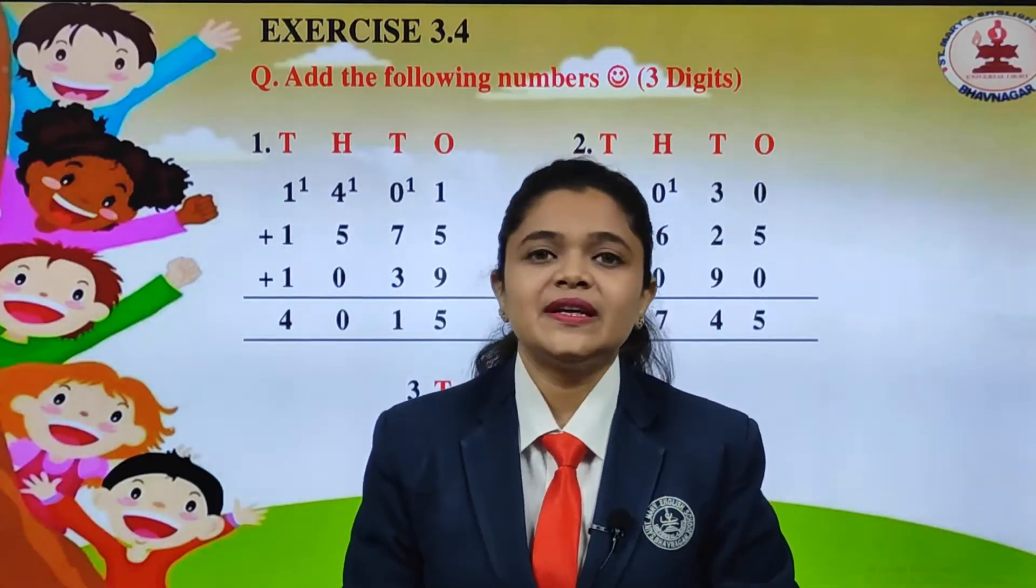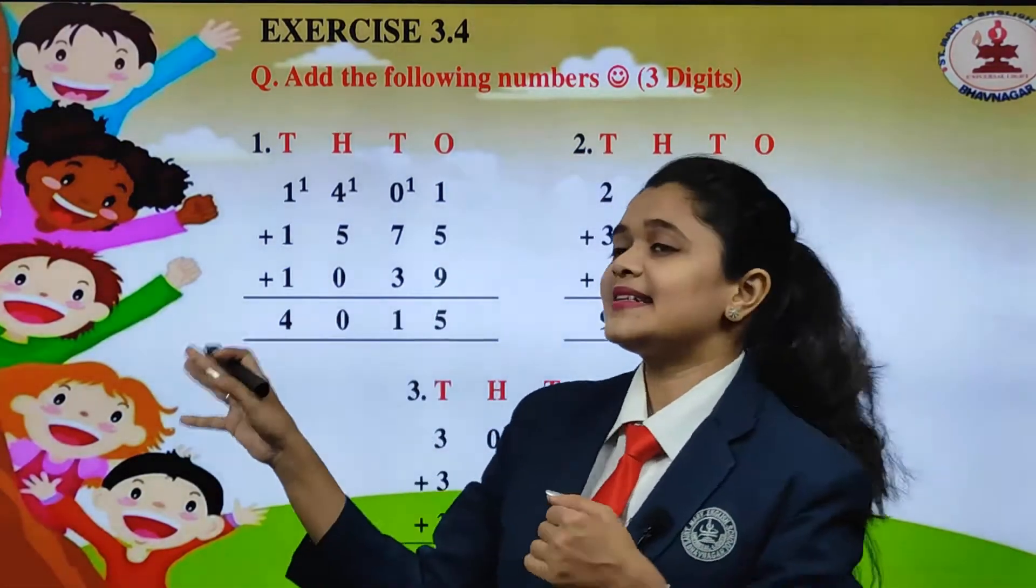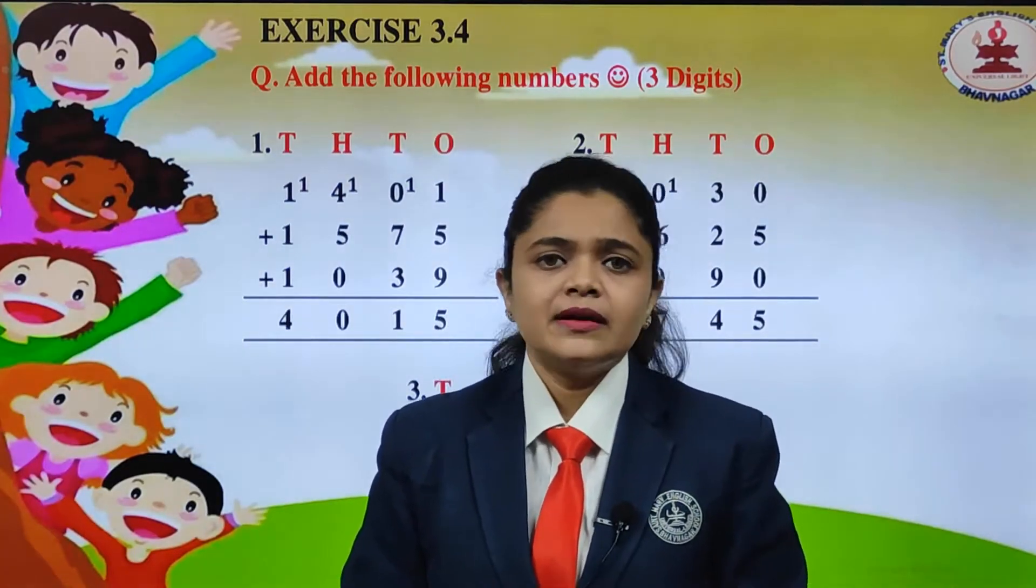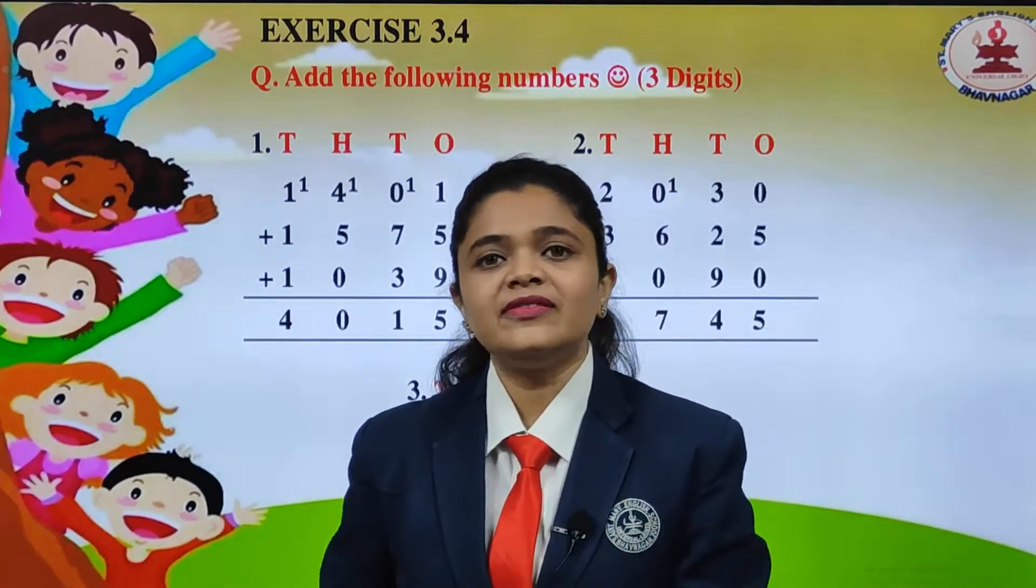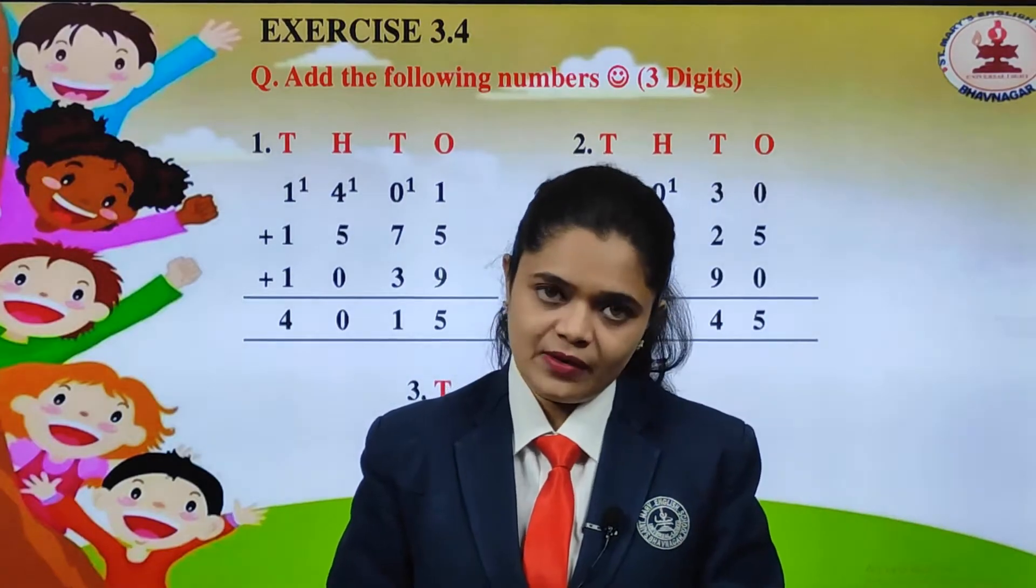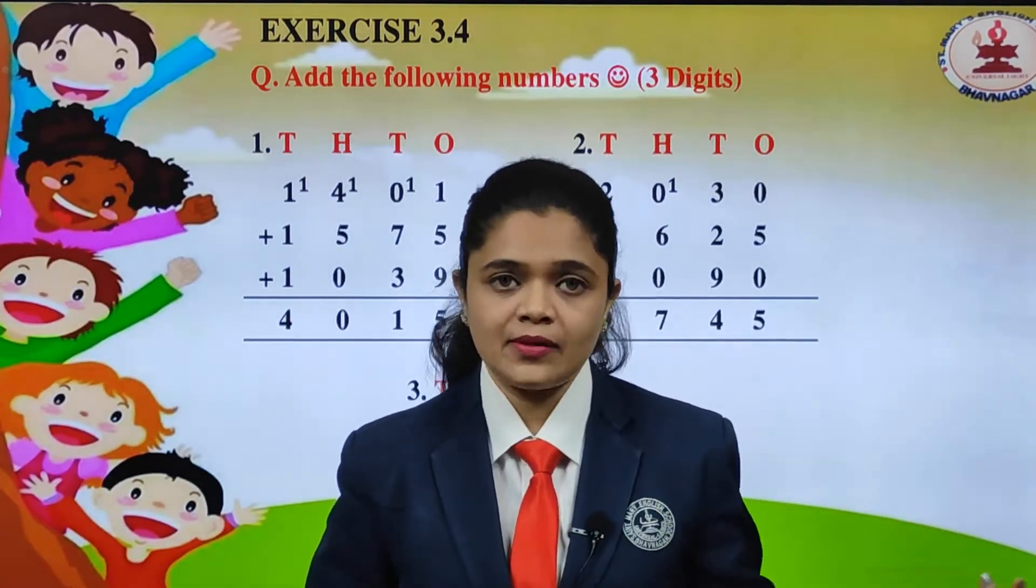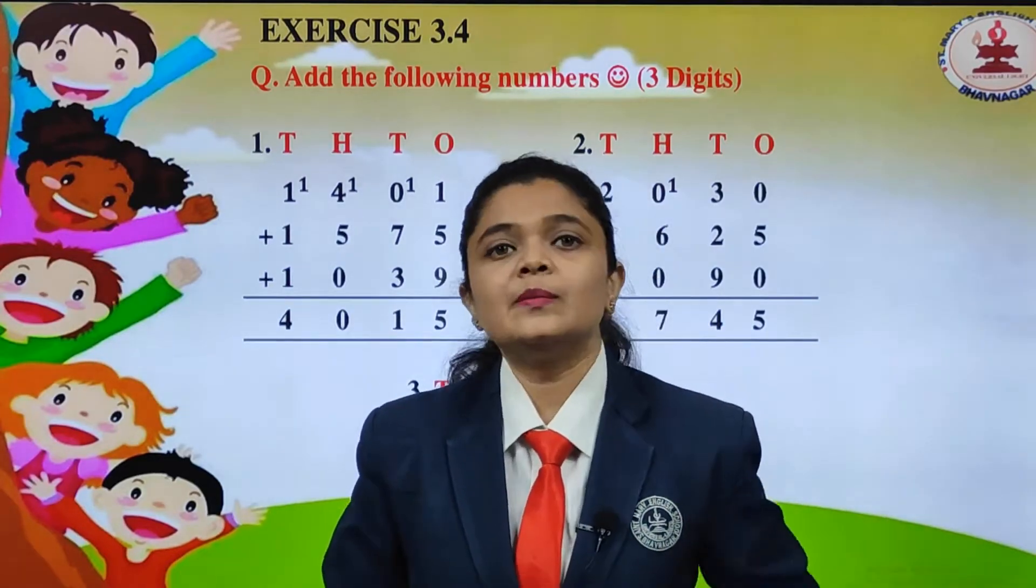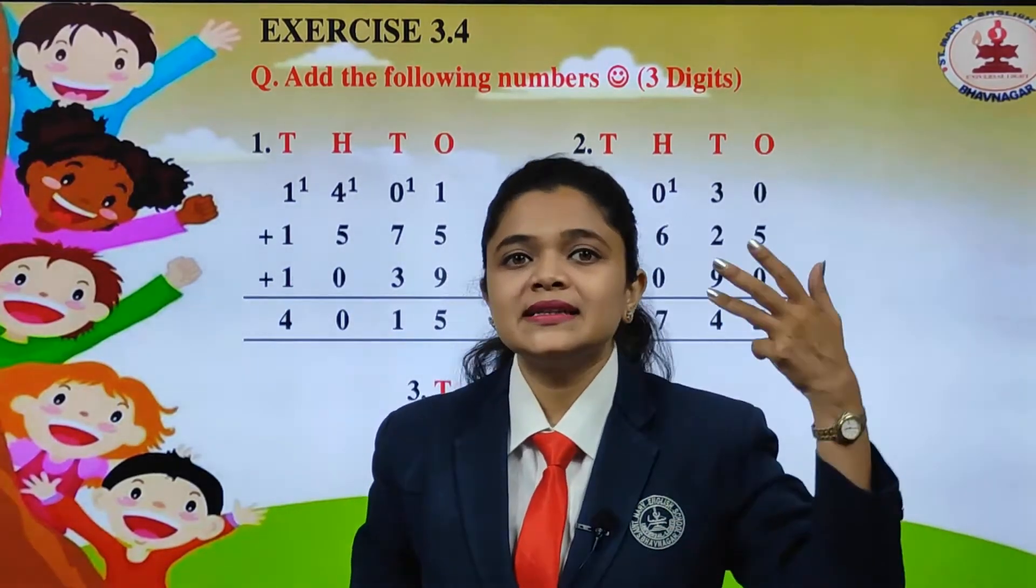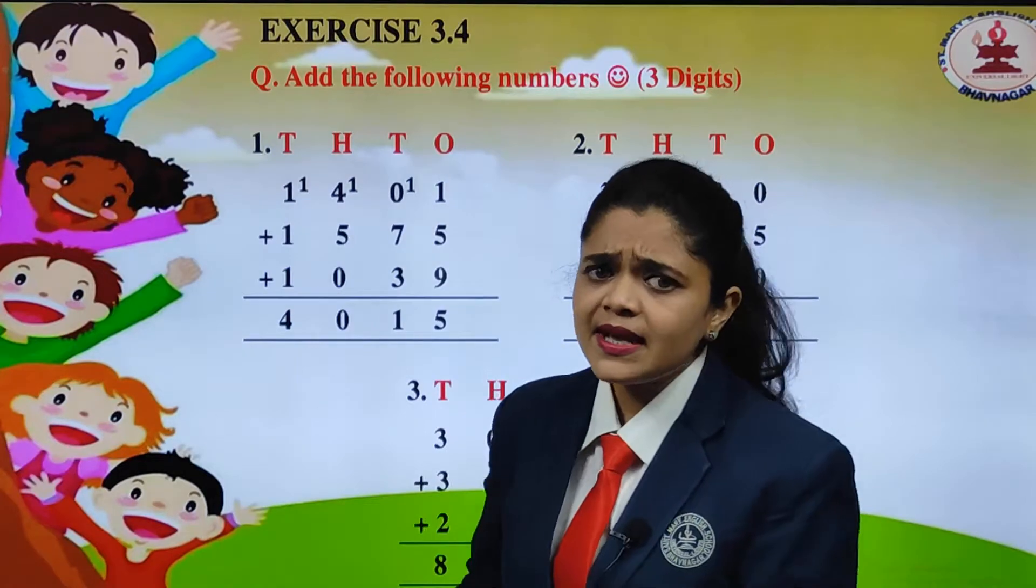Now children we will see the new exercise, that is exercise 3.4. Students we have again the three place values over here, that is four place values. Ones, tens, hundreds and thousands. But we have to add three digits. Let us see how we will do.